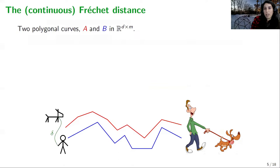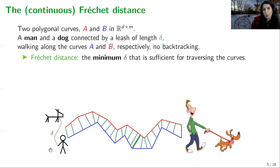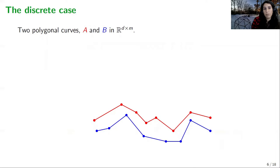A great thing about this distance measure is that it can be described with a very nice man-dog analogy. Given two polygonal curves, red and blue, imagine a man standing on the first point of the blue and a dog standing on the first point of the red. They are connected by a leash of some length delta and walk along their paths — they can walk at whatever speed they like but cannot move backwards. The Fréchet distance is then the length of the leash that allows them to reach the endpoints of their paths.